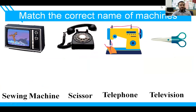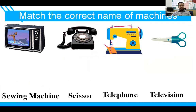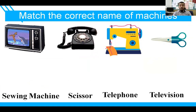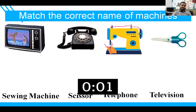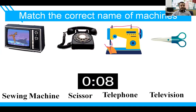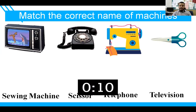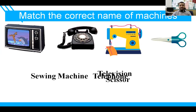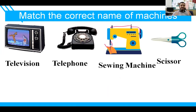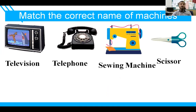Here is one activity about machines. Four machines are given and their names are shown below — you have to match those names with the pictures. You get 10 seconds. Your timer has started! The answer is: first one is a television, second one is a telephone, third one is a sewing machine, and fourth one is scissors. This was about matching correct names with the correct picture.